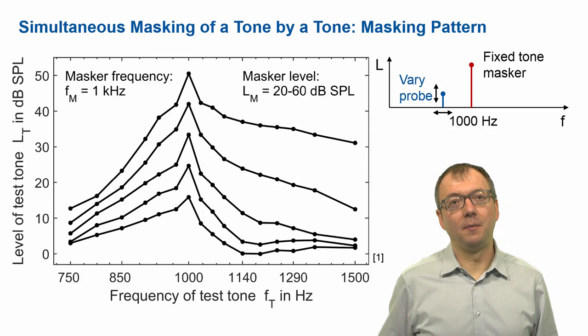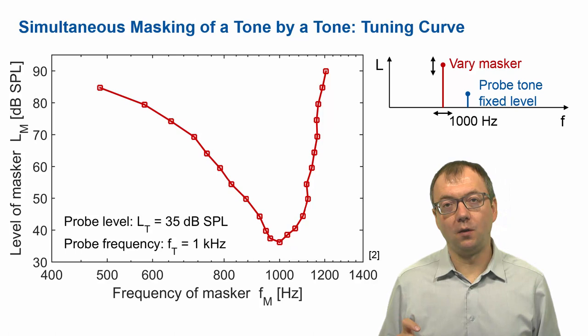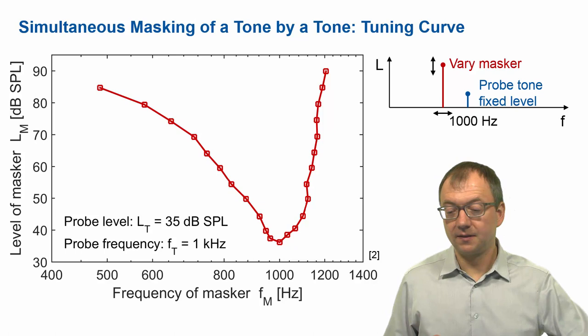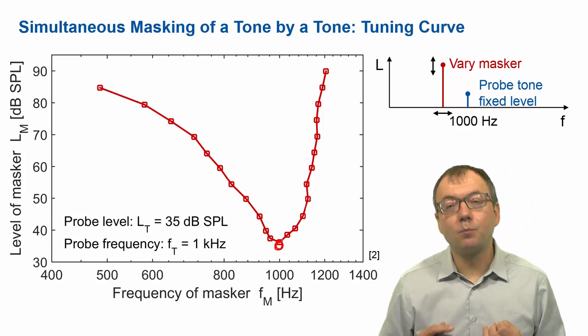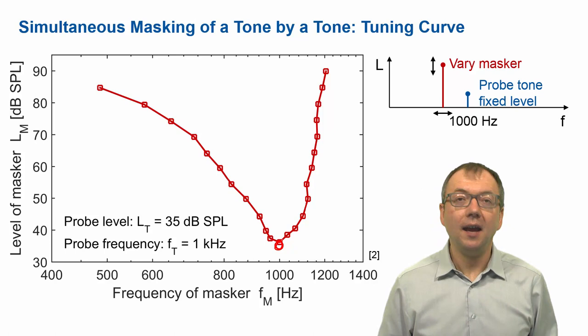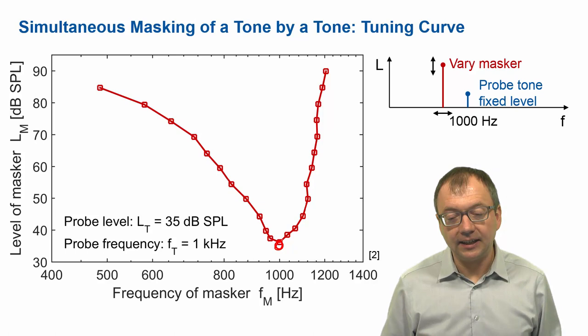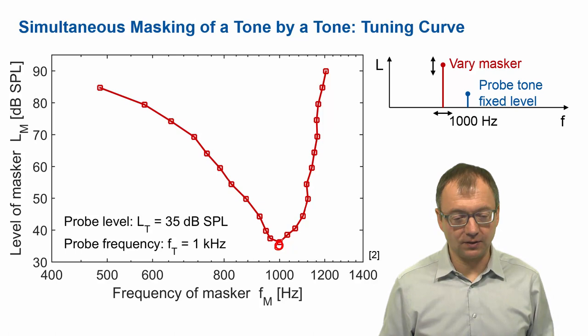We can now run this masking experiment and plot the data in a slightly different way. In this modification of the experiment we keep the probe tone level fixed — say we have a probe of one kilohertz at a fixed level — and that probe now has to be masked. We now vary the masker level so as to just mask that probe. This is what's being plotted in the psychoacoustic tuning curve, which follows the idea of a physiological tuning curve. It's exactly that masker level necessary to mask the probe at a certain level.